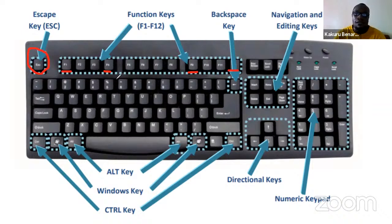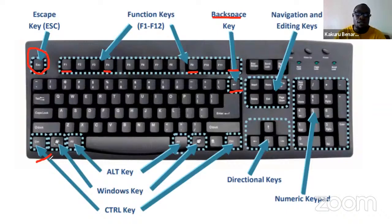The Backspace key is used to delete characters from right to left. We also have the Control key, which is used in conjunction with other keys — for example, Control+S to save, Control+P to print, Control+V to paste. Then we have direction keys: the arrow keys.